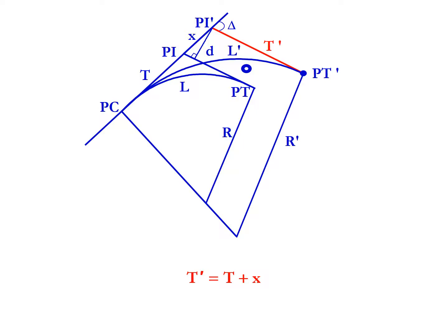In the case of a tangent moving towards the PC, so being shifted inward, the x will be negative so you have a shorter tangent length. R prime is T prime divided by the tangent of delta over 2.